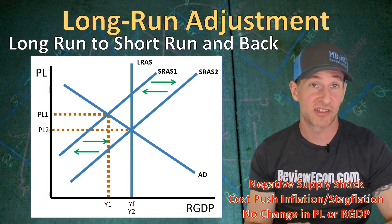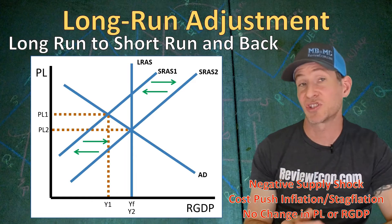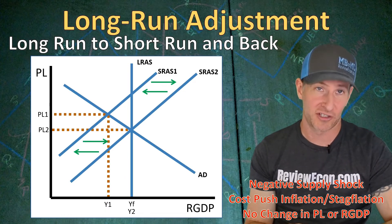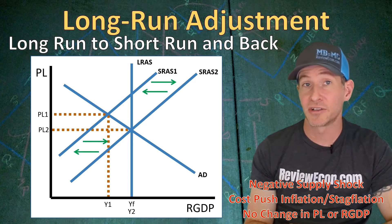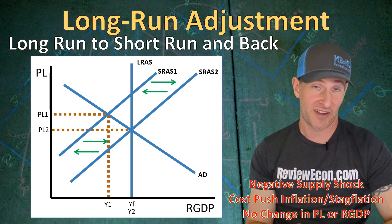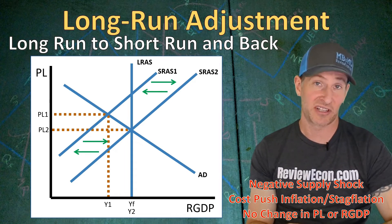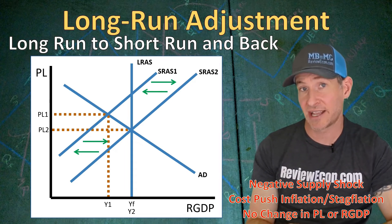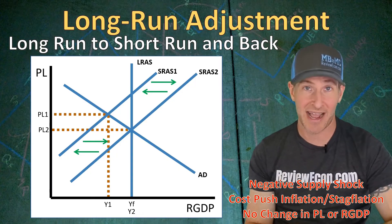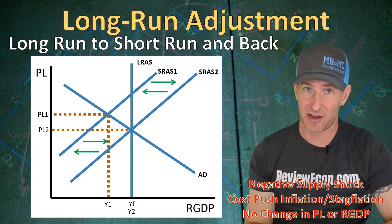These long-run changes — where the short-run aggregate supply curve shifts right or left because of a change in resource prices — are self-adjustment changes. Later on, you'll learn about fiscal policy and monetary policy to find out how the Federal Reserve and the government can help close these inflationary and recessionary gaps. But what we're talking about here is when the government takes no discretionary action, the economy fixes itself in the long run.